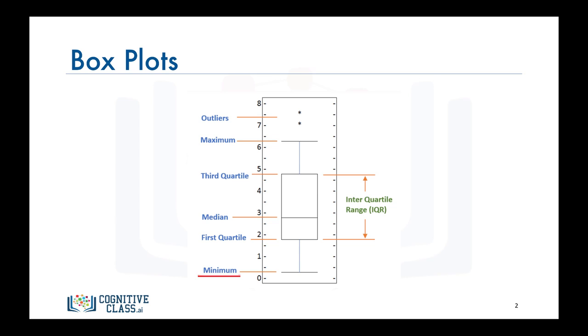The first dimension is minimum, which is the smallest number in the sorted data. The second dimension is first quartile, which is the point 25% of the way through the sorted data. In other words, a quarter of the data points are less than this value. The third dimension is median, which is the median of the sorted data.